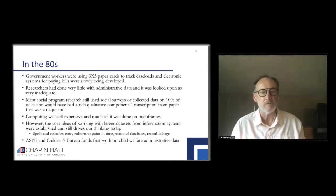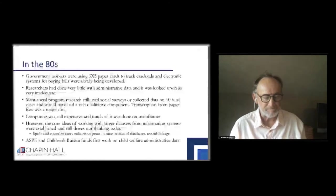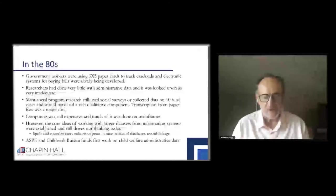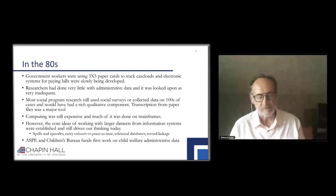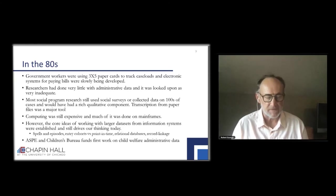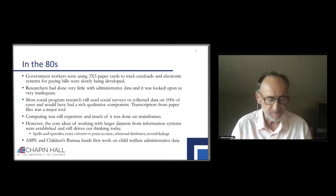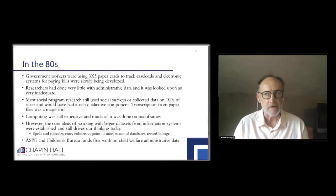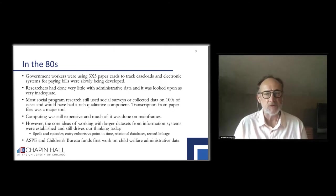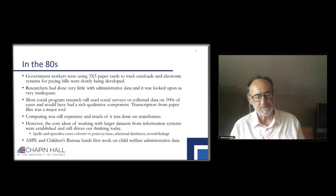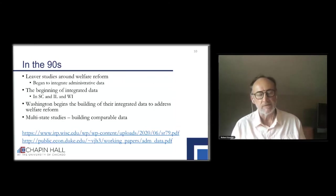Those of us who were using it were really seen as a black sheep. Most social programs still used social surveys or collected data on hundreds of cases and would have had a rich qualitative component, which is something I believe we've lost. Transcriptions from paper files was a major tool. Computing was very expensive and we worked on mainframes. But some of the ideas still very active today started at this time. Bain and Elwood helped us understand spells. We moved towards working with entry cohorts, started thinking about relational databases, and we were beginning to do record linkage that would prepare us for integrated data. During the 80s, the Children's Bureau funded the first work on developing administrative data to understand child welfare better.